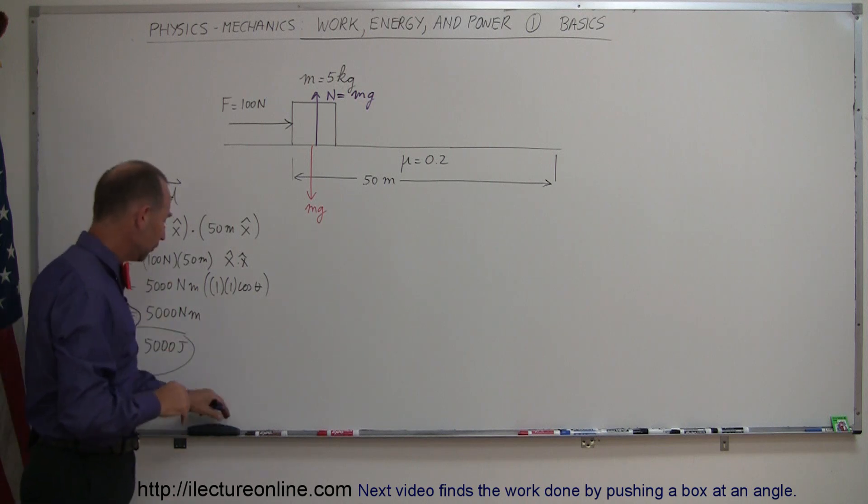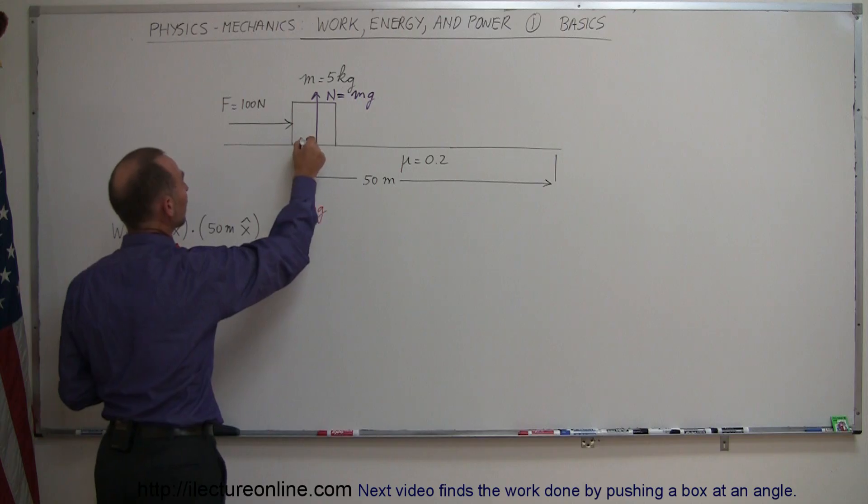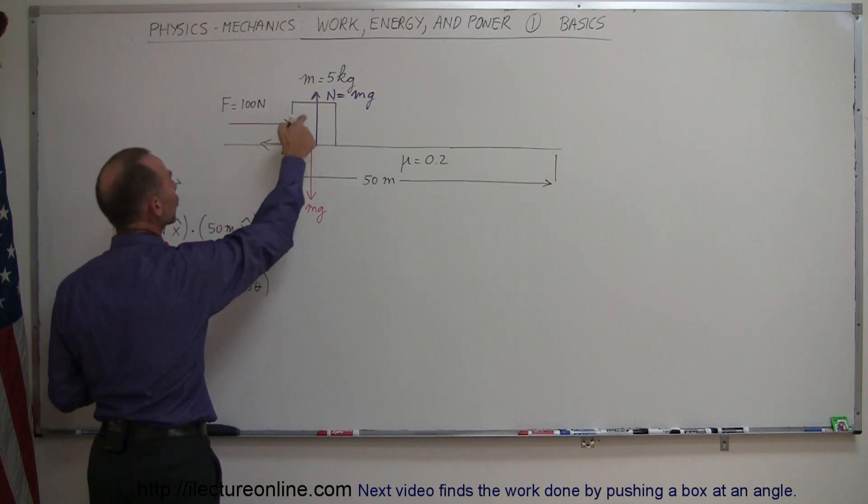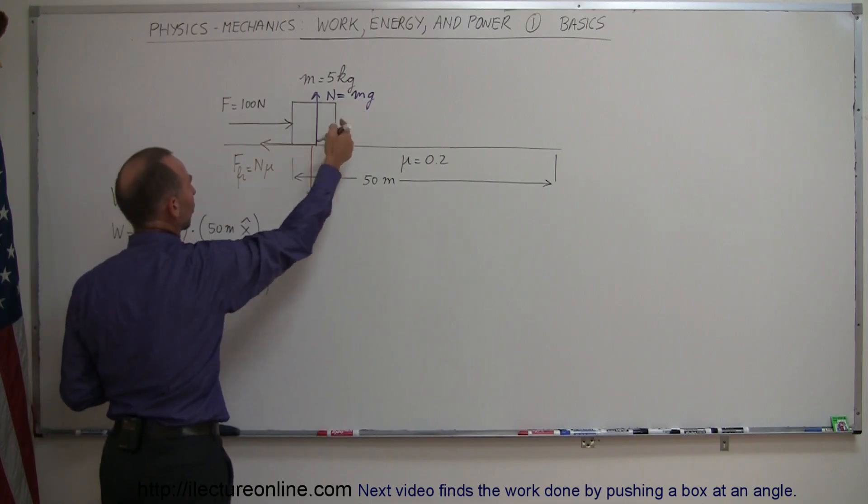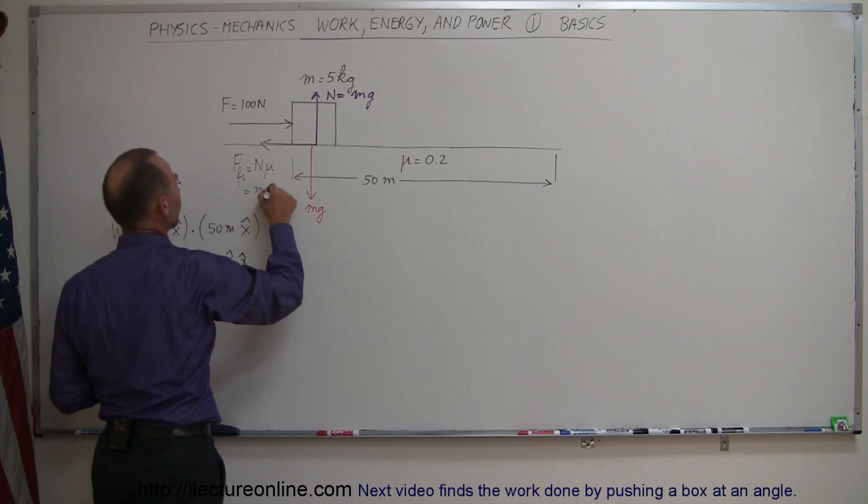Notice that they're equal in magnitude but opposite directions, so those cancel each other out. However, you also have another force called the friction force, which will be opposing the motion. So it will be a force friction to the left, which by definition is equal to the normal force times mu. The normal force is going to be mg, so it's equal to mg mu.